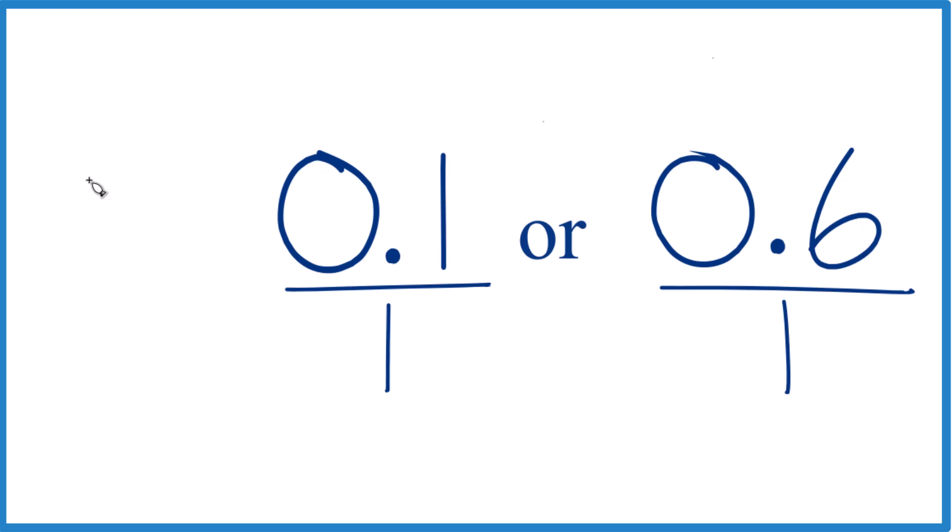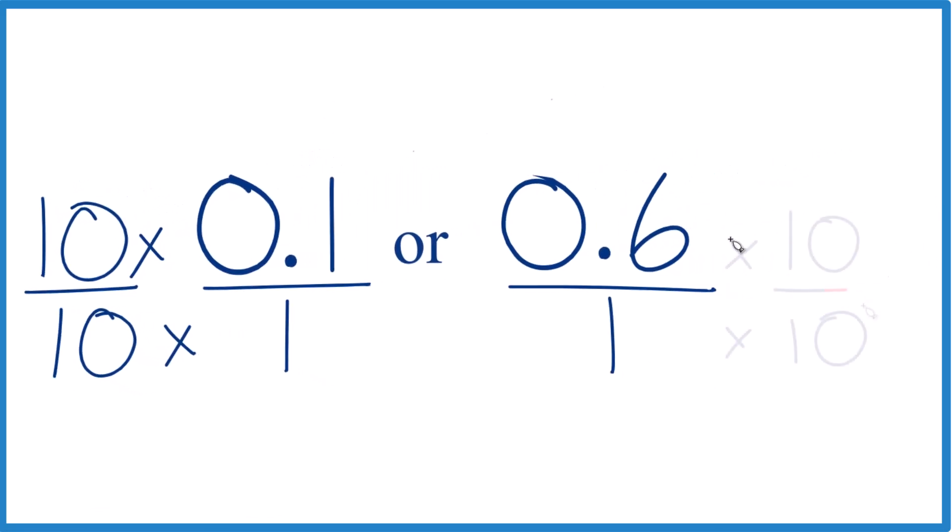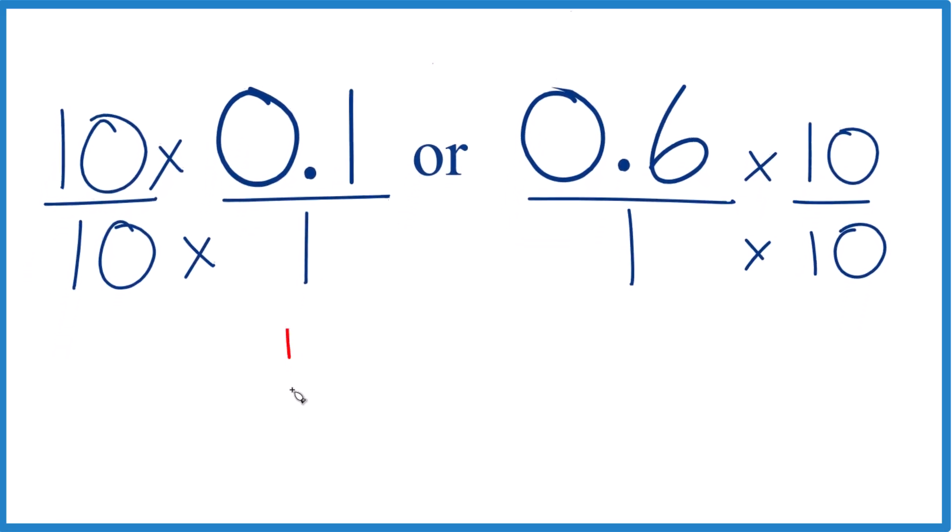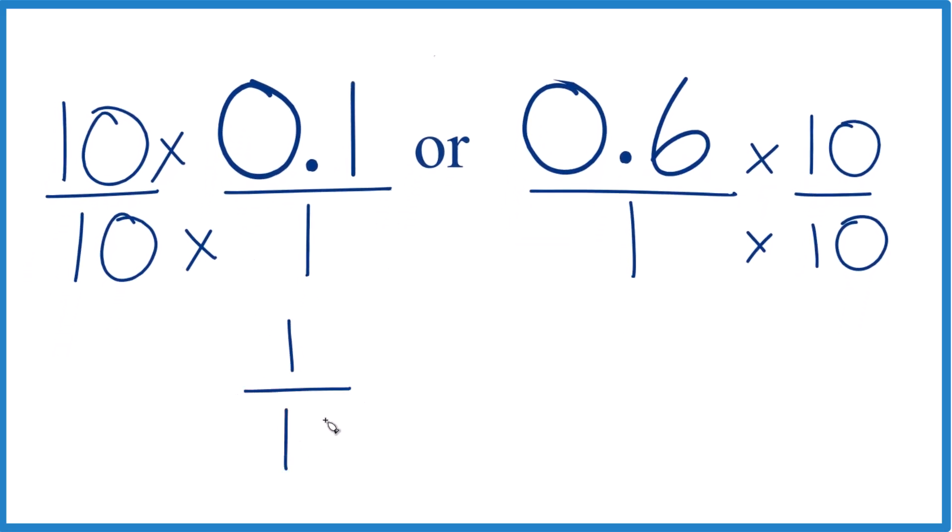Now what I'll do, since this is the tenths place, I want to get this to be a whole number and I multiply by 10. But I can't just multiply the numerator by 10, I need to also multiply the denominator. That's because 10 over 10 is 1, so I'm just multiplying by 1, I don't change the value. Do the same thing over here. So now, 10 times 0.1 is just 1, 10 times 1 is 10. And over here, 0.6 times 10, that's just 6, and 1 times 10 is 10.